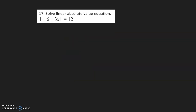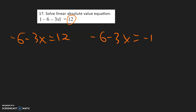Number 17. We know this is going to be a regular case, so we need to write two equations because we have a positive 12. Negative 6 minus 3x is equal to positive 12, and negative 6 minus 3x is equal to negative 12.